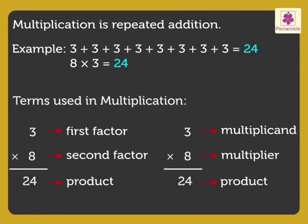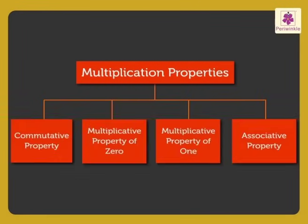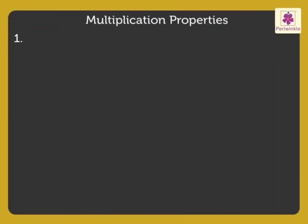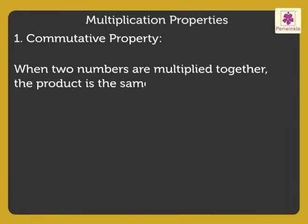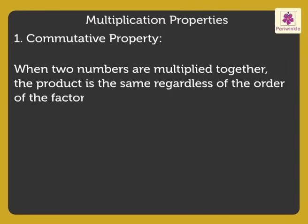Now, let us review the multiplication properties. First, commutative property: when two numbers are multiplied together, the product is the same regardless of the order of the factors. For example...